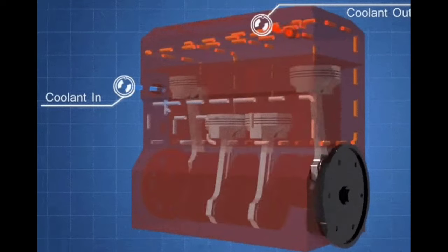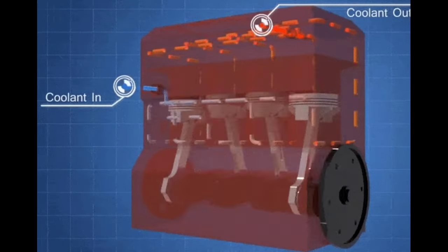Observe the graphical image of the IC engine cooling system. Boiling and condensation are also known as convective modes of heat transfer, but involve a change of phase. Boiling means conversion from liquid phase to vapor phase; condensation means change of phase from vapor to liquid phase. Here, water is converted into steam — vapor phase. A cooling bottle placed on a table causes water vapor in the atmosphere to condense to liquid state.